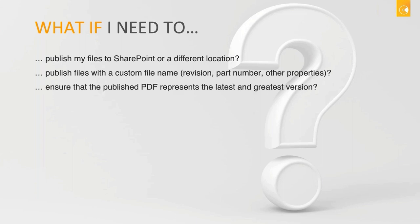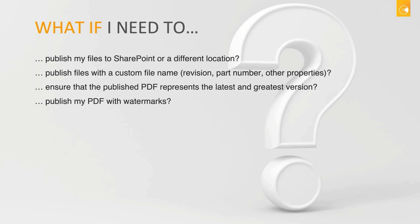It's very important that the PDFs and other formats we publish are the latest and greatest version, to guarantee we're going into production with the right files. Can PowerJobs help with that? Yes — PowerJobs ensures you're always using the latest and greatest version automatically. In addition, the solution also makes sure that source files are not modified when the neutral format such as PDF or DXF is being created, avoiding version errors in Vault. And if I need to add a watermark? Yes, PowerJobs also provides that functionality — you can stamp watermarks onto PDF files.